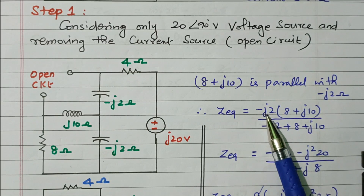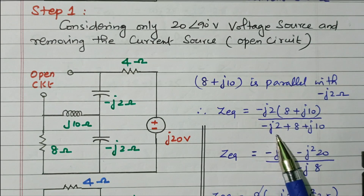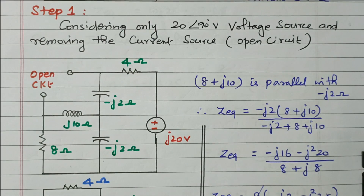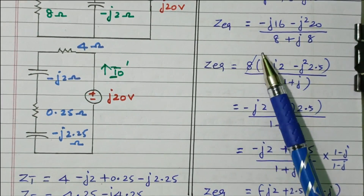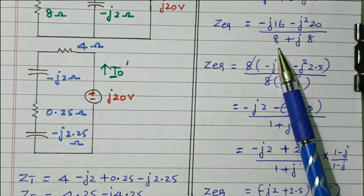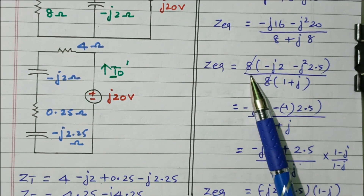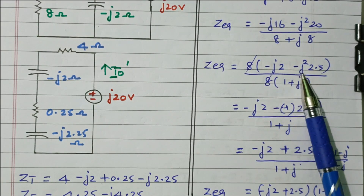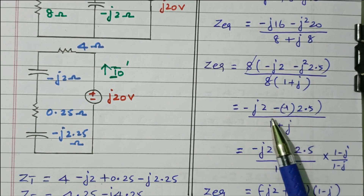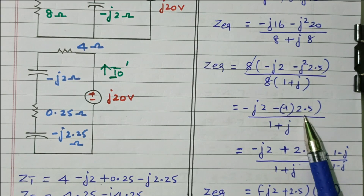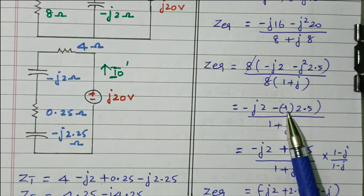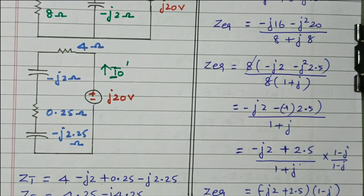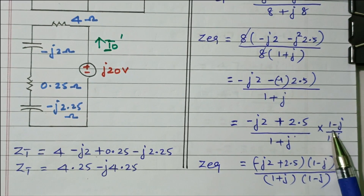Z equivalent equals minus j2 times (8 + j10) divided by (minus j2 + 8 + j10). After simplification, the numerator becomes minus j16 minus j²20, and the denominator is 8 + j8, with 8 taken outside. J² equals minus 1, so we get (2.5 minus j2) divided by (1 + j). To remove the complex denominator, we multiply and divide by the complex conjugate (1 − j).